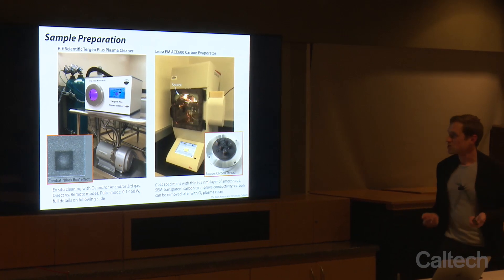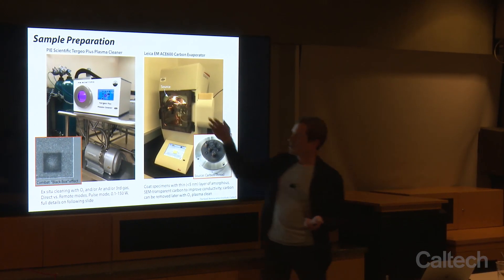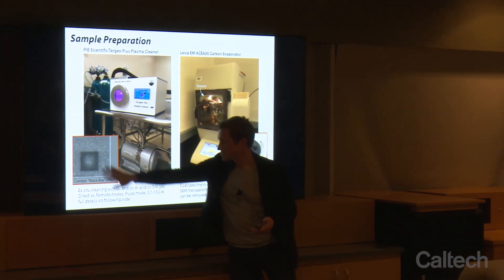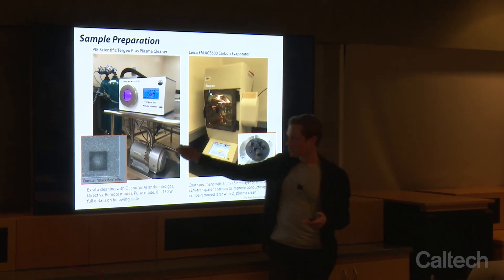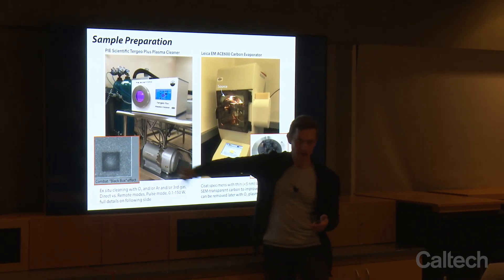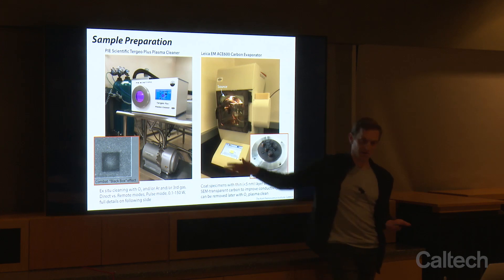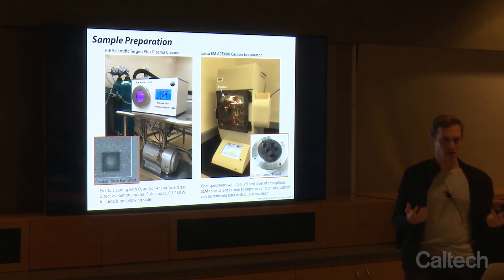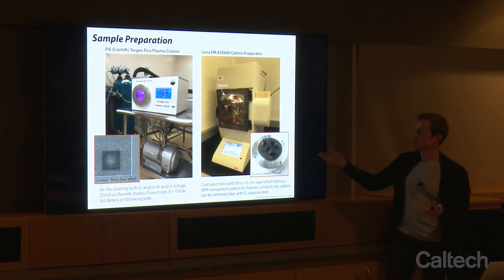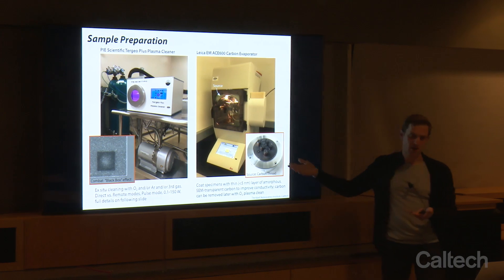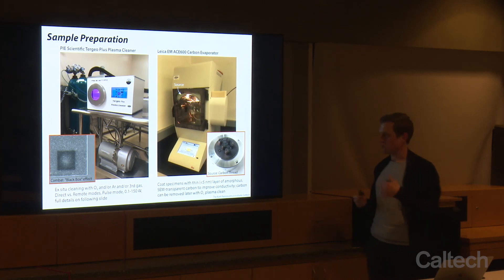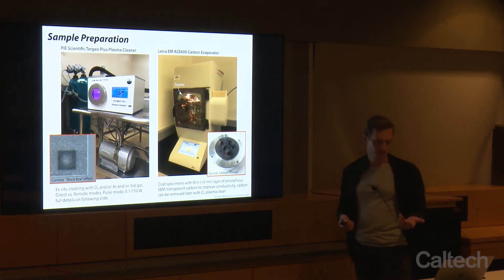In terms of sample preparation, we use an oxygen and argon plasma cleaner to remove organics from the surface of your sample. That combats what we call the black box effect, where organic material can evolve from the sample and get chemically vapor-deposited back on as a new thin film of carbon, which doesn't give off as many secondary electrons and appears darker. If you have a non-conductive specimen and can afford to, you can coat it with a carbon evaporator — just a few nanometers of carbon works both for imaging with the SEM and for making your sample conductive for use with the gallium-focused ion beam.